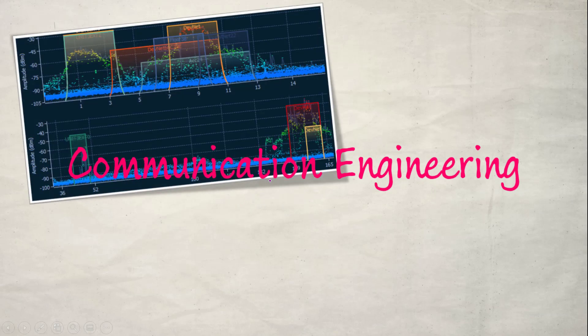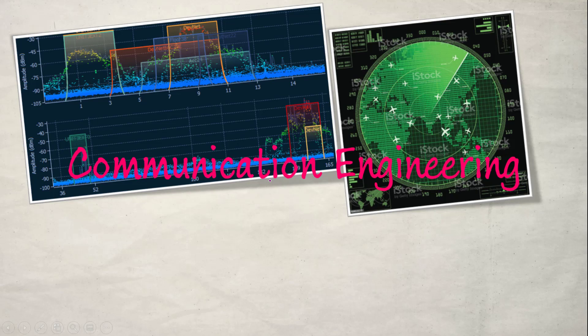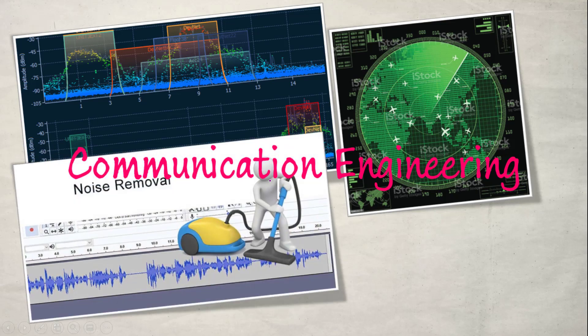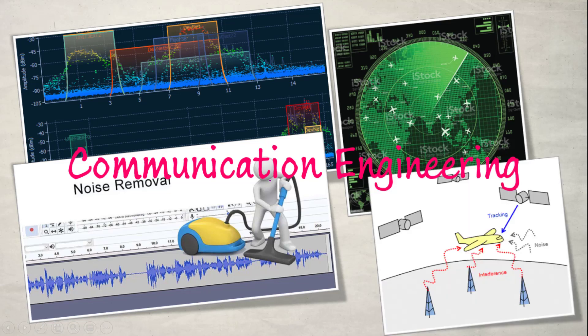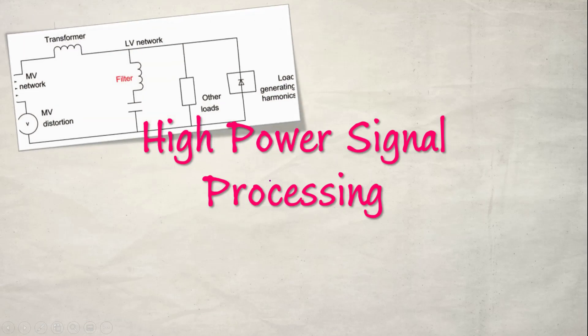In communication engineering there are many applications, such as allocating different frequency bands to channels in wireless communication. In radar, signal processing is used in war fields to detect enemy aircraft, and in busy airports to detect aircraft and adjust timing for air traffic control. Noise removal is another application — software can remove fan noise or external sounds from a recording. There are also applications related to satellite communication.